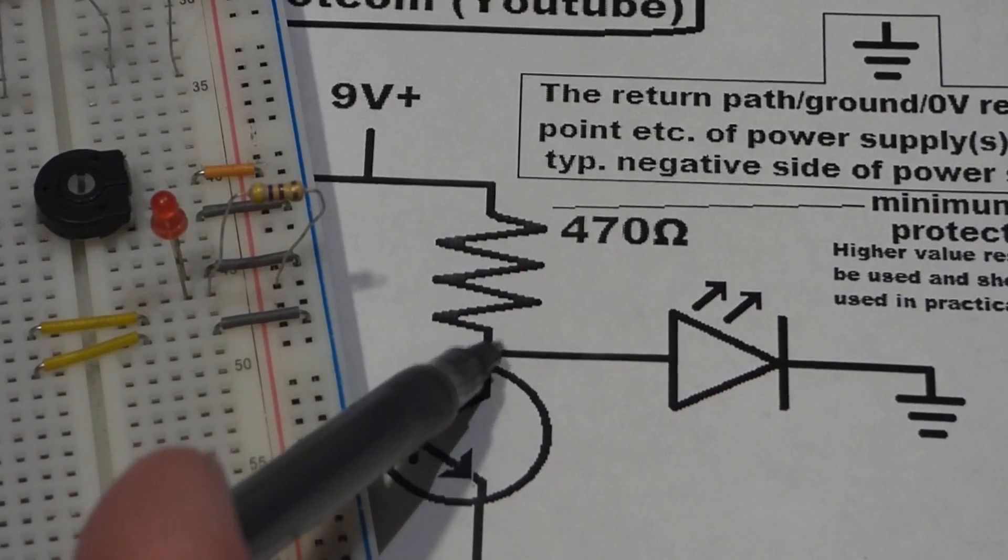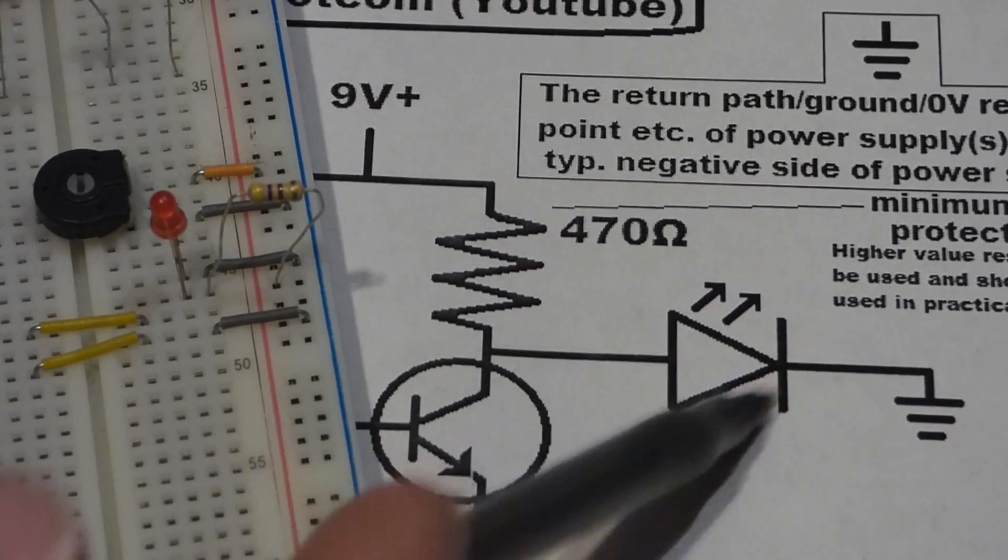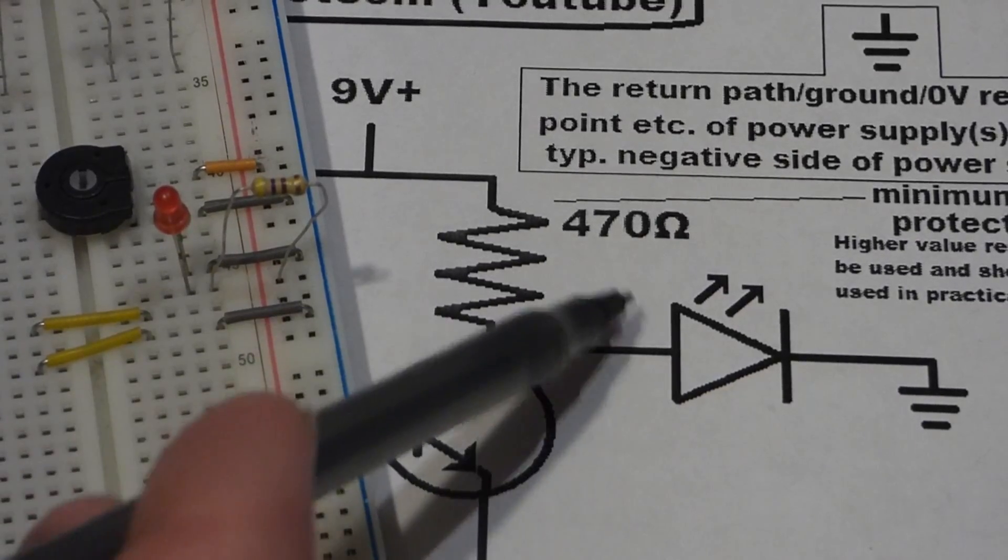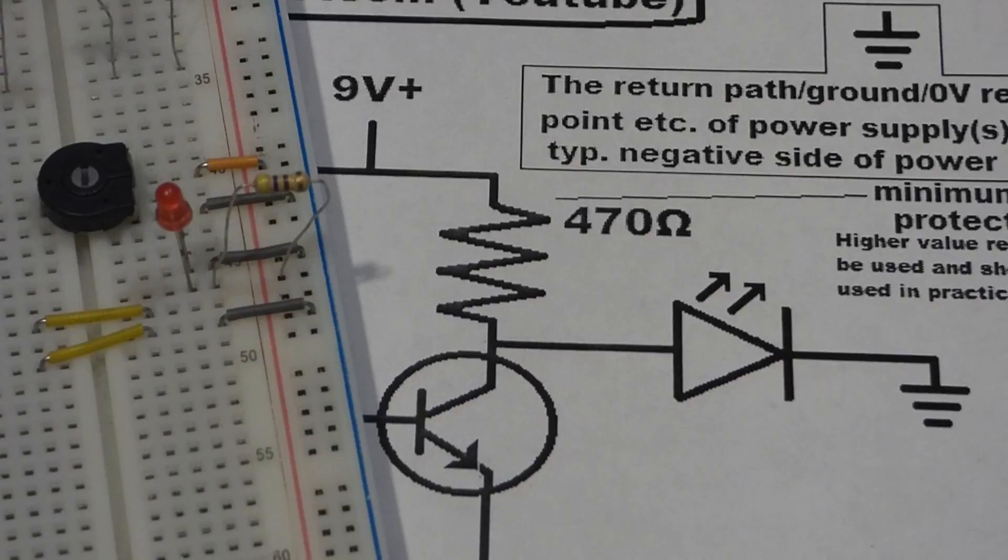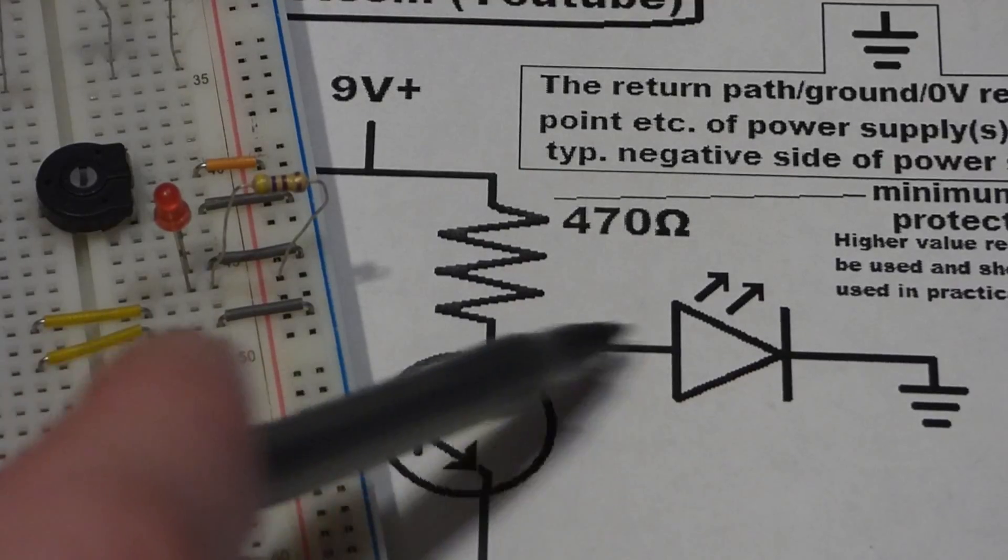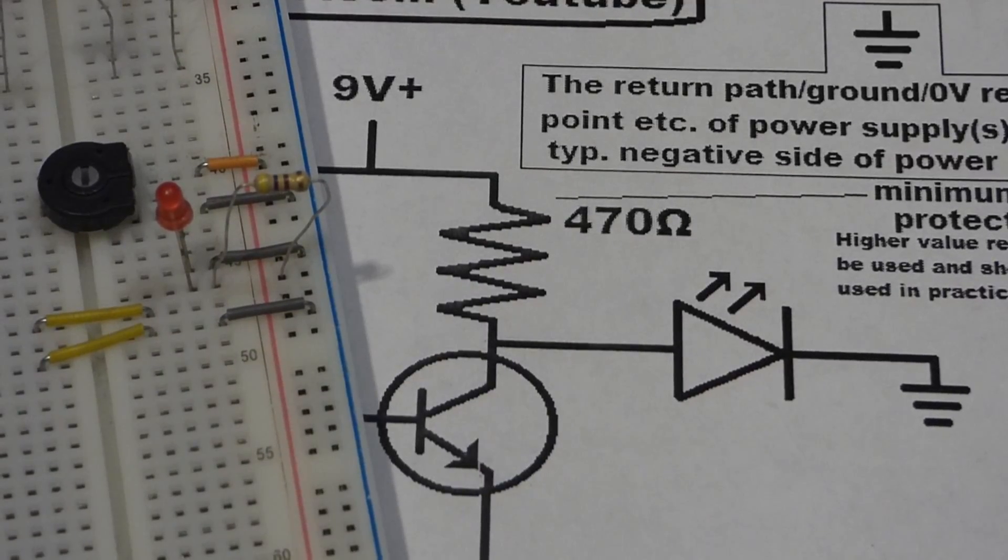Right here in the schematic is our output. The LED just happens to be the load. We could put something else for the LED, but the LED is nice in a demonstration circuit because you can tell when the output is on, the LED will be on. You'll see the light. When the output's off, the LED will be off. There won't be light.